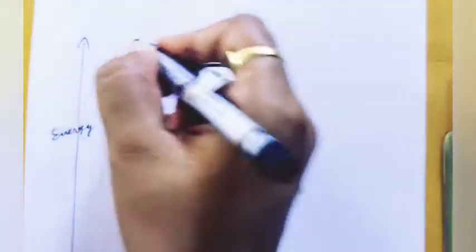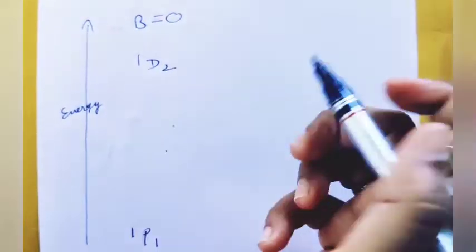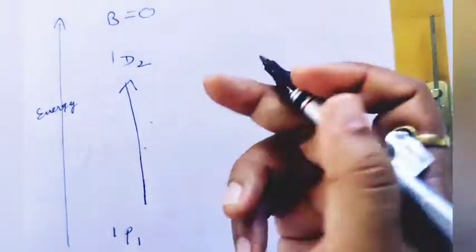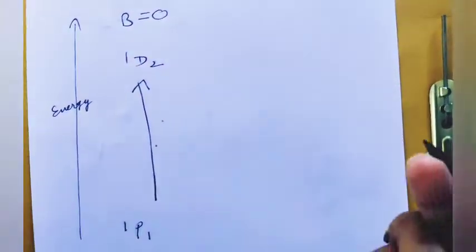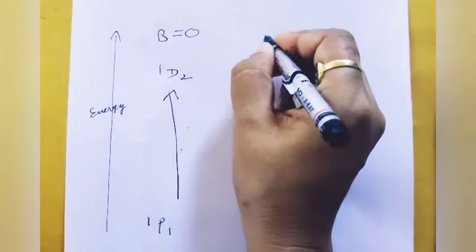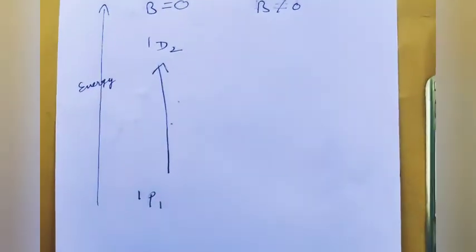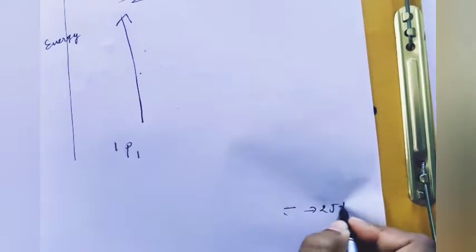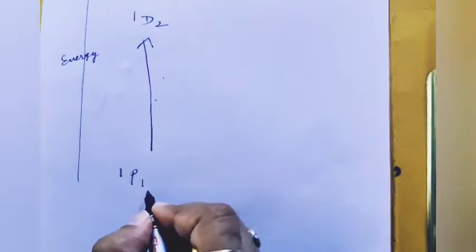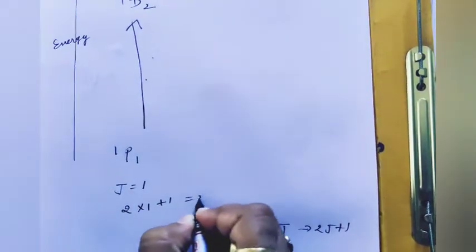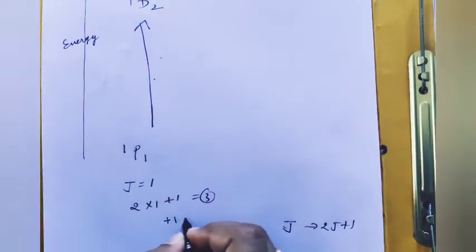When no magnetic field is applied (B equals zero), only one spectral line is allowed. When the magnetic field is applied (B not equal to zero), the levels split. For J equals 1, the number of mJ values is 2J plus 1 equals 3 lines, with mJ values of plus 1, 0, and minus 1.